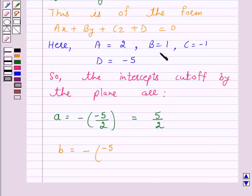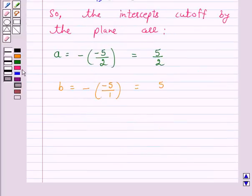upon B, which is equal to 5 and c is equal to minus D upon C, which equals minus 5.